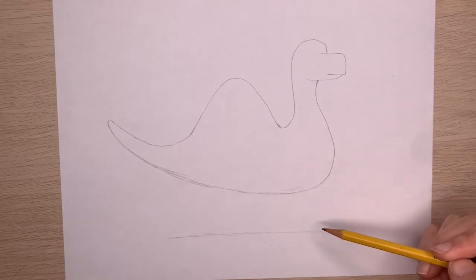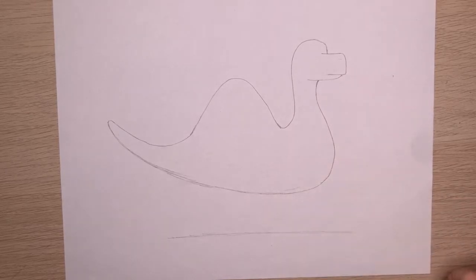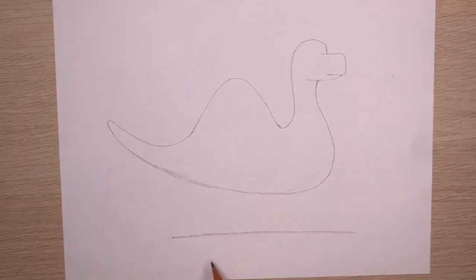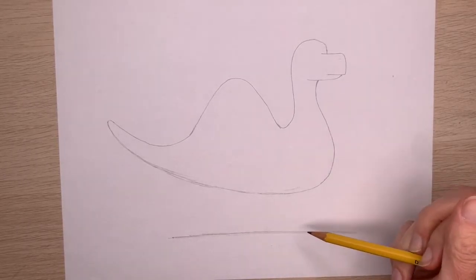If you want really long legs, put your ground further down on your paper. If you want shorter legs, draw it closer. But right now we've got this rough straight line coming on the bottom of our paper somewhere to represent the ground.